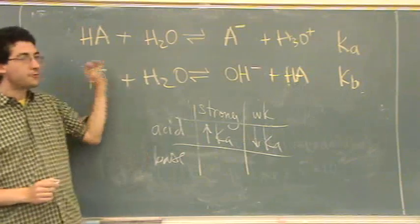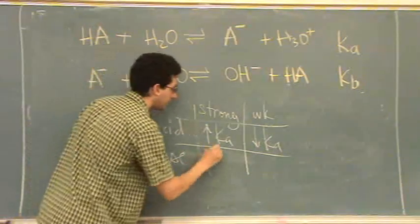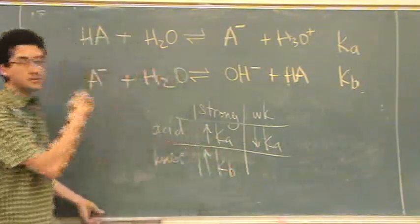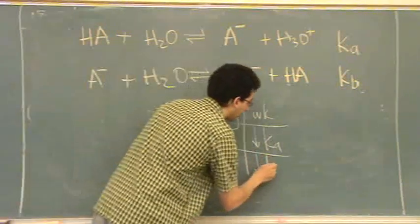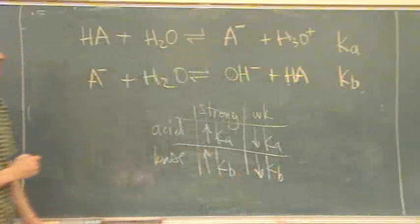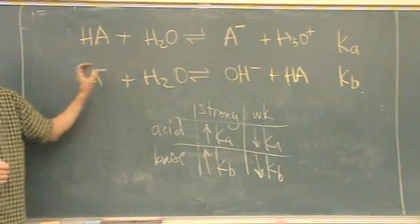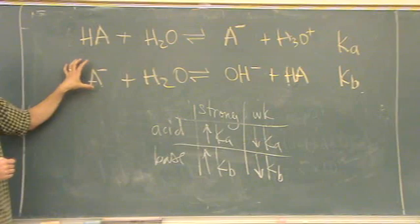For a base, if it's strong, the forward reaction goes very well. So you have a KB, that means it's receiving or accepting a lot of protons. And here, very small KB for a weak base, because it's just not going forward at all. Actually, the equilibrium lies to the left.